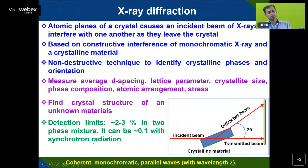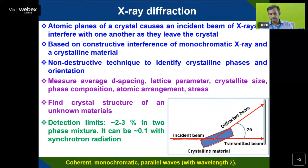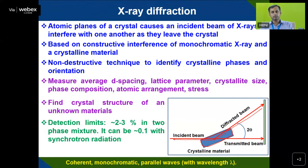In X-ray diffraction, atomic planes of a crystal cause the incident beam of X-rays to interfere with one another. When an incident beam falls on an atomic plane, it interacts with the crystal lattice and diffracts at a particular angle. Based on the constructive interference of monochromatic X-rays with a crystalline material, you will get a diffraction pattern. In an amorphous material, there is no long range ordering, so you may not get a perfect X-ray diffraction peak — instead you will get a broad spectrum.